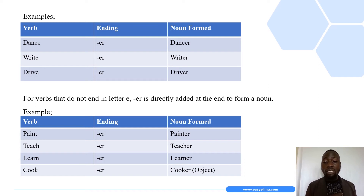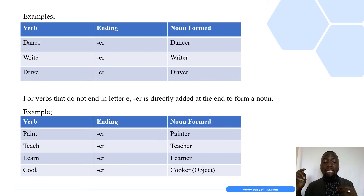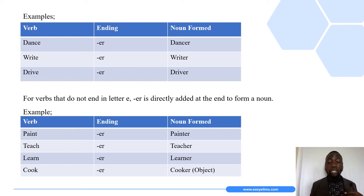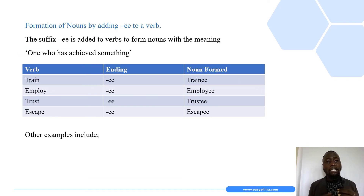'Cooker' is not used for a person — cooker refers to an object. Remember, a person who cooks is called a cook or a chef. But the object used to prepare food is called a cooker — that is where we get 'gas cooker', 'stove cooker', and so on.